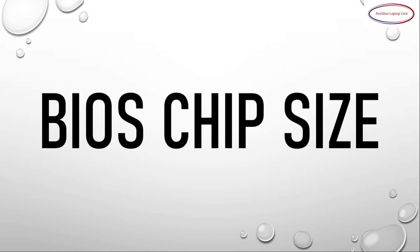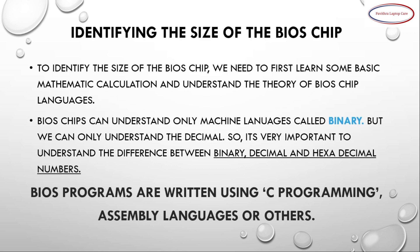Now we learn about BIOS chip sizes. To identify the size of a BIOS chip we need to first learn some basic mathematical calculations and understand the theory of BIOS chip language. BIOS chips can understand only machine language, and this machine language is called binary. It is very important to understand the difference between binary, decimal, and hexadecimal numbers. BIOS programs are written using C programming, assembly languages, or others.